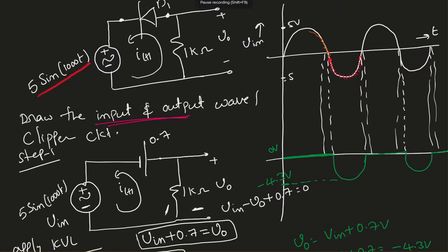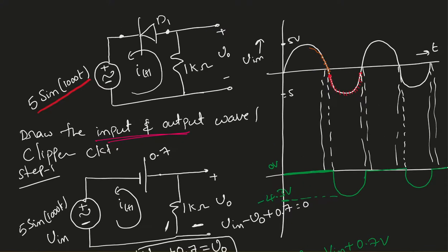That gives us the clipper circuit. What we are doing is clipping the positive cycle entirely, and also clipping the portion up to negative 0.7 volts. This is one example of a clipper circuit. Thank you.